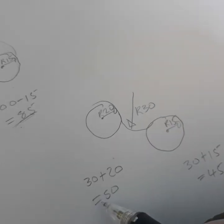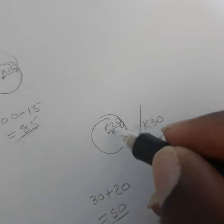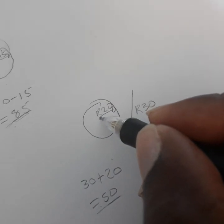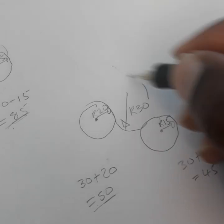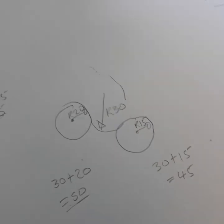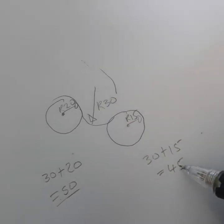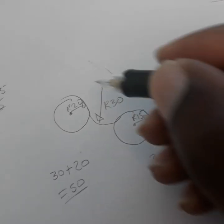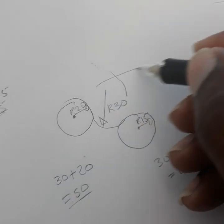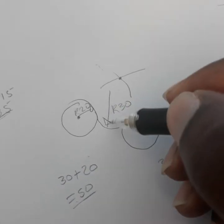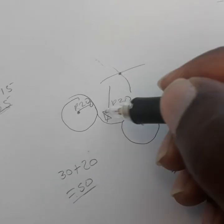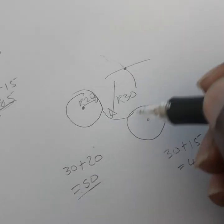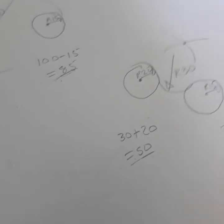Take your compass, measure 50, and put your compass here because the radius was 20 for this circle. Make an arc on this side and an arc on this side. Then measure 45 with your compass, put your compass on the other circle, and make an arc. Where they meet is your center point. Measure radius 30 and put your compass there to get this arc.